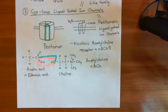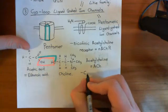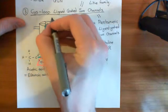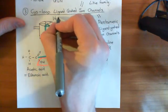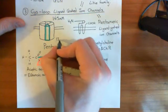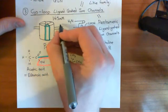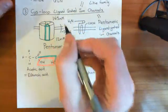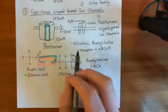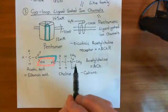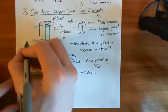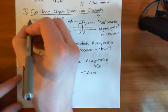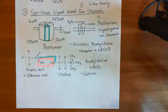Nicotinic acetylcholine receptors, when they open, are selectively permeable to cations. They allow sodium ions to move into the cell. The extracellular sodium concentration is around 145 mM and the intracellular concentration around 12 mM. The electrical potential difference across the membrane is around negative 70 millivolts. These receptors are permeable to both sodium and potassium. The intracellular potassium concentration is around 155 mM, whereas extracellularly it is around 4 mM.